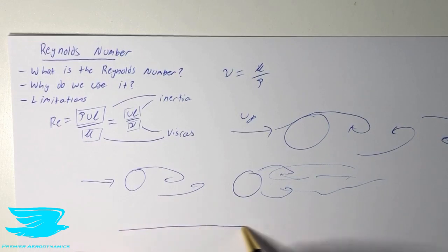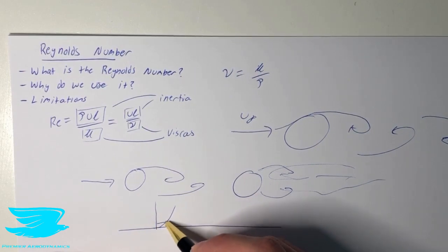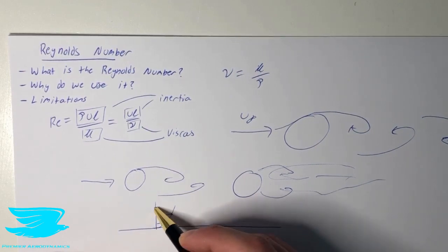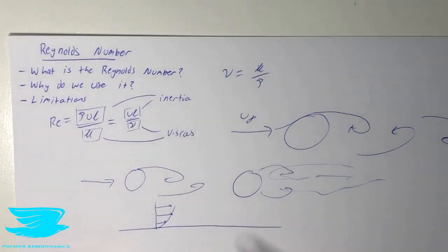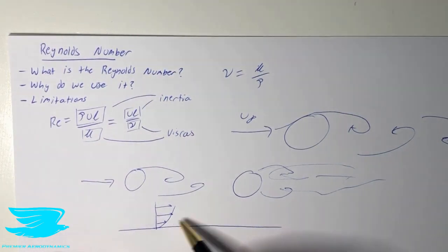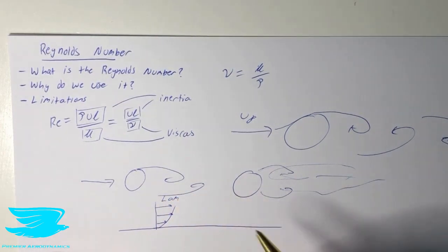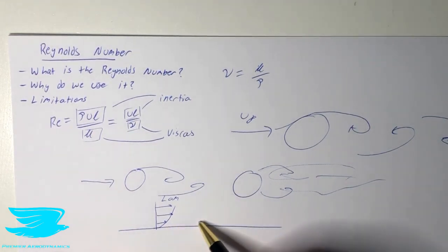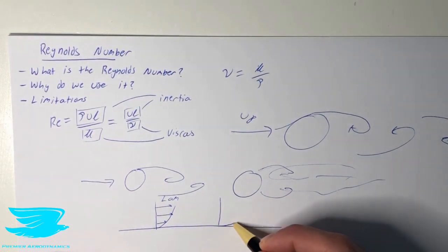Over a boundary layer — a surface — we have a boundary layer forming. If we have the velocity profile and a very low Reynolds number, as the flow continues going over the surface, it won't develop into a turbulent boundary layer. This will still stay laminar. However, if we have a very high Reynolds number, as we go along, the boundary layer will then start to transition to a turbulent boundary layer.